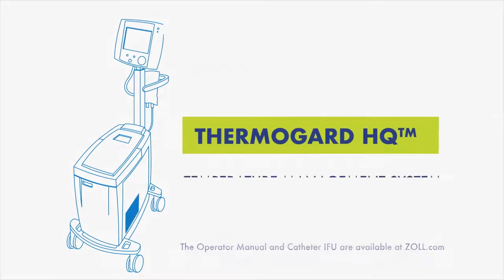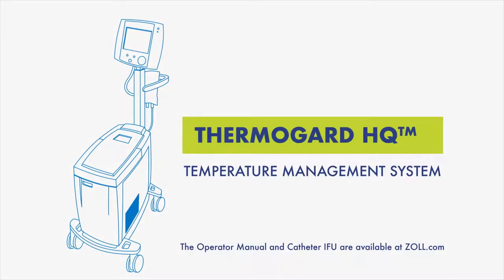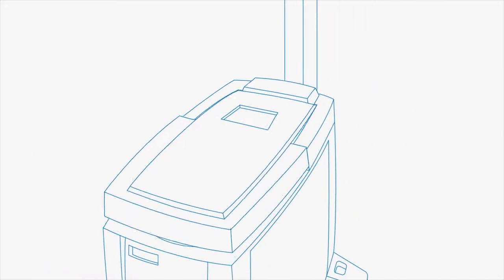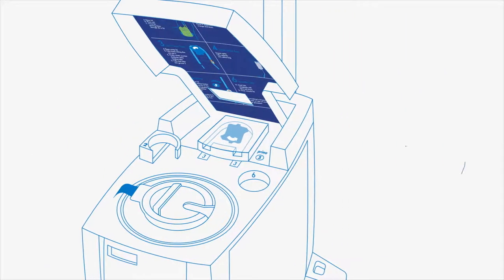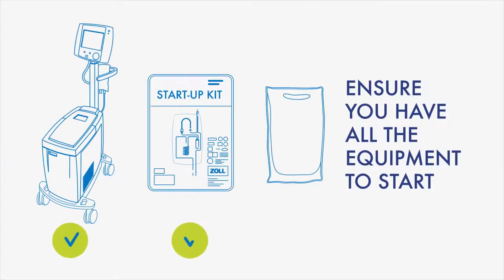Setting up the ThermoGuard HQ system takes 3 to 5 minutes. Setup guides are located on the machine for reference. Ensure you have all the equipment to start.